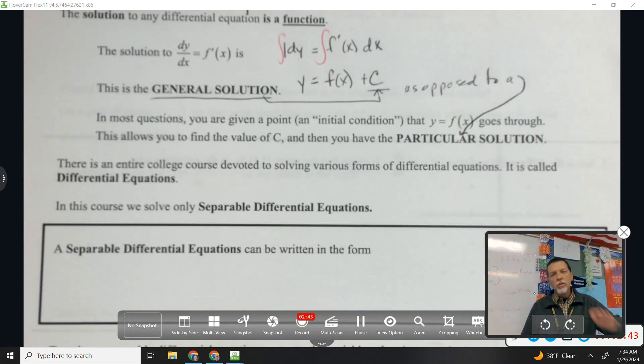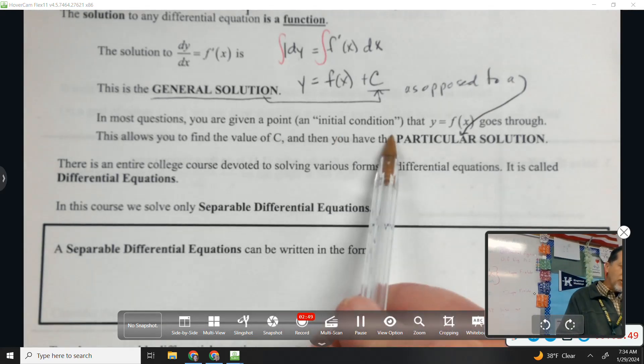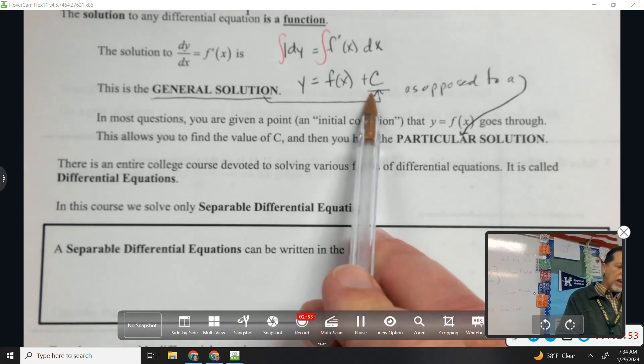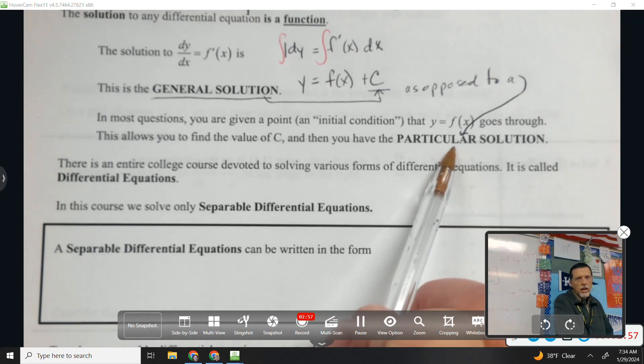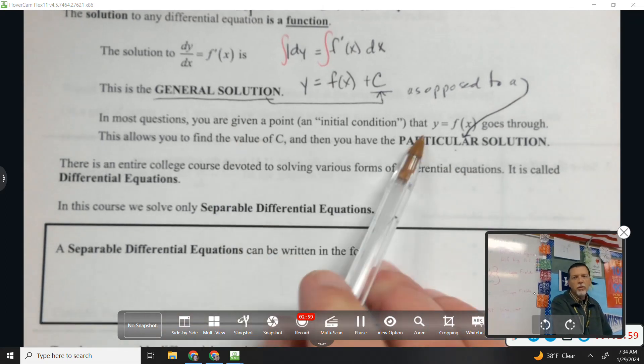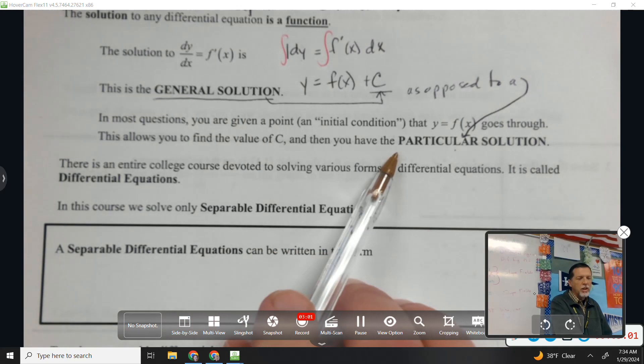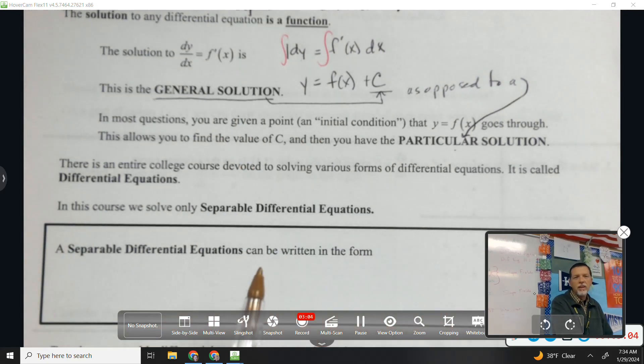So general solution has the plus C on there. If they give us some information called an initial condition, like give us a point, usually we can figure out what C is and that gives us a particular solution. It'll be pretty clear which one we want, because if we want particular, it'll give you a point that you plug in to figure out what C is.